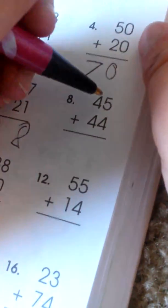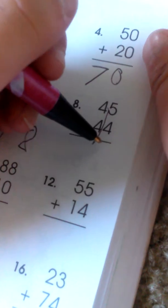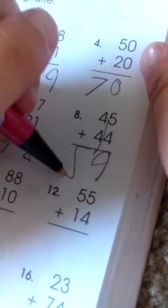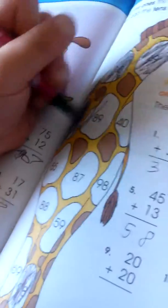Now 45 plus 44. 5 plus 4 is 9. 4 plus 4 is 8. So the answer is 89. 89 is right here.